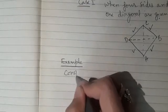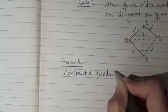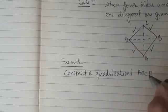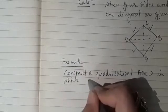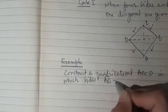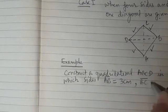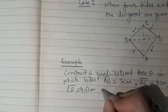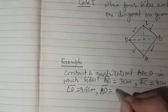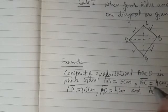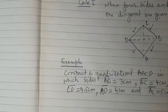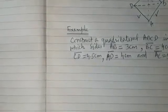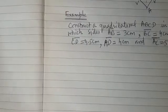You will be provided with lengths of the sides and the length of one diagonal. The question will come like: construct a quadrilateral ABCD in which AB is 3 cm, BC is 4 cm, CD is 4.5 cm, AD is 4 cm, and AC — the diagonal — is 5 cm.